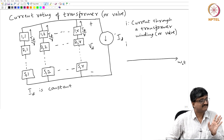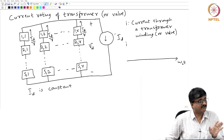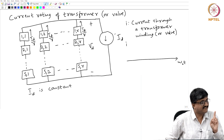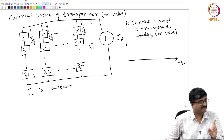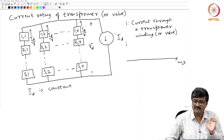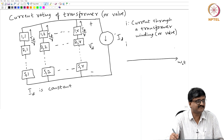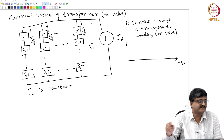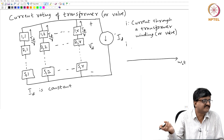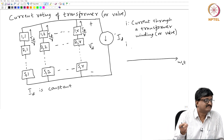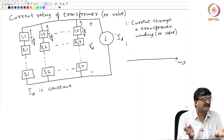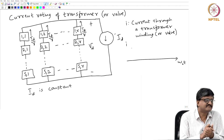At any instant only one conducts, and all will get an equal opportunity to conduct — this rules out the possibility of a constant I. If only one conducts at a time, then for that particular transformer winding it is nonzero and for others it is zero. So the waveform is a pulse.